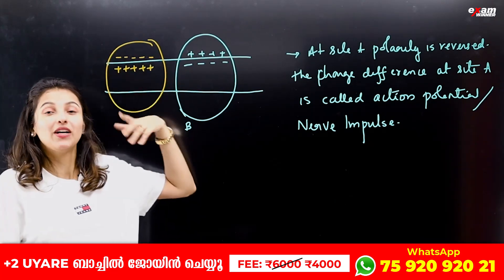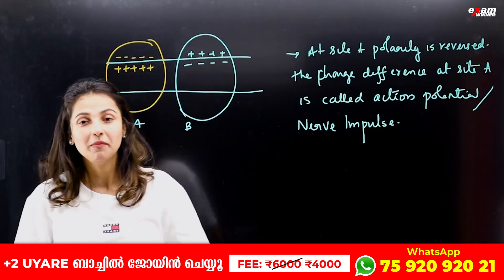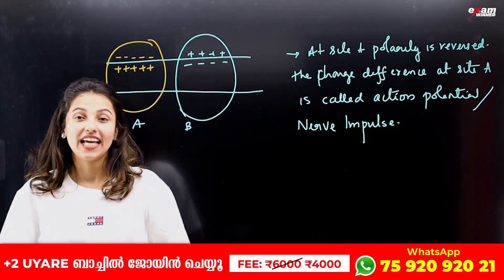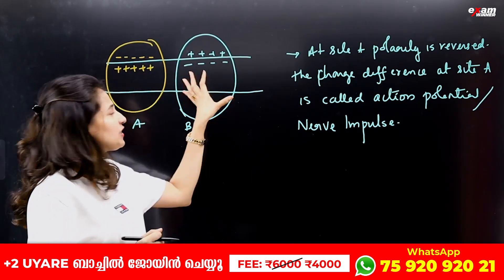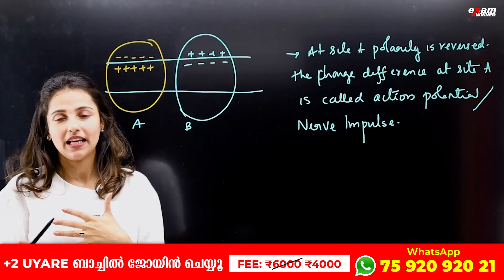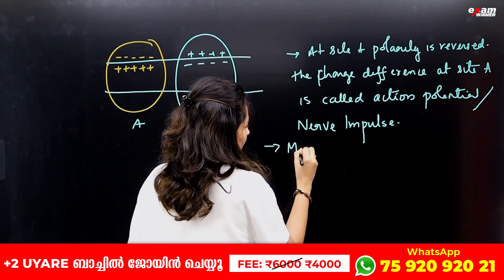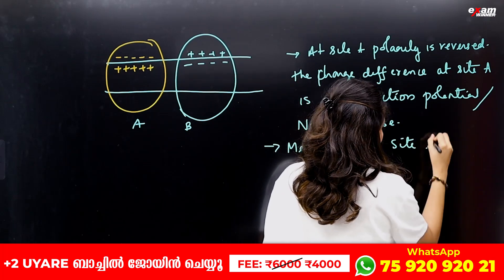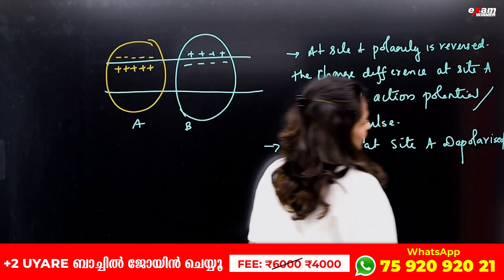At site A, the action potential is generated and the membrane is depolarized. Meanwhile, at site B, outside is still positive charge and inside is still negative charge — site B remains normally polarized. This charge difference between site A and site B causes charges to move.